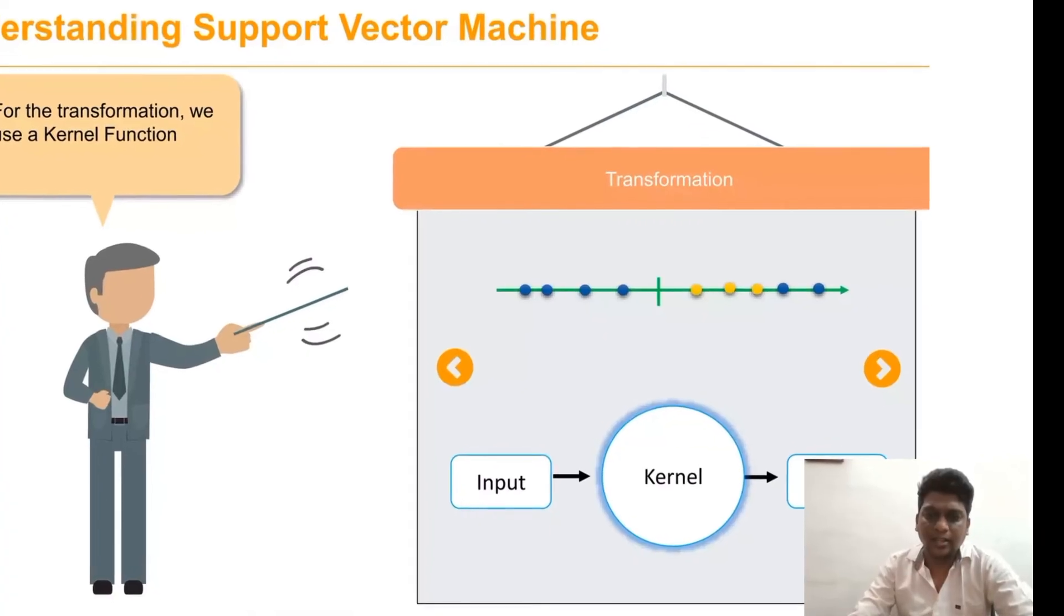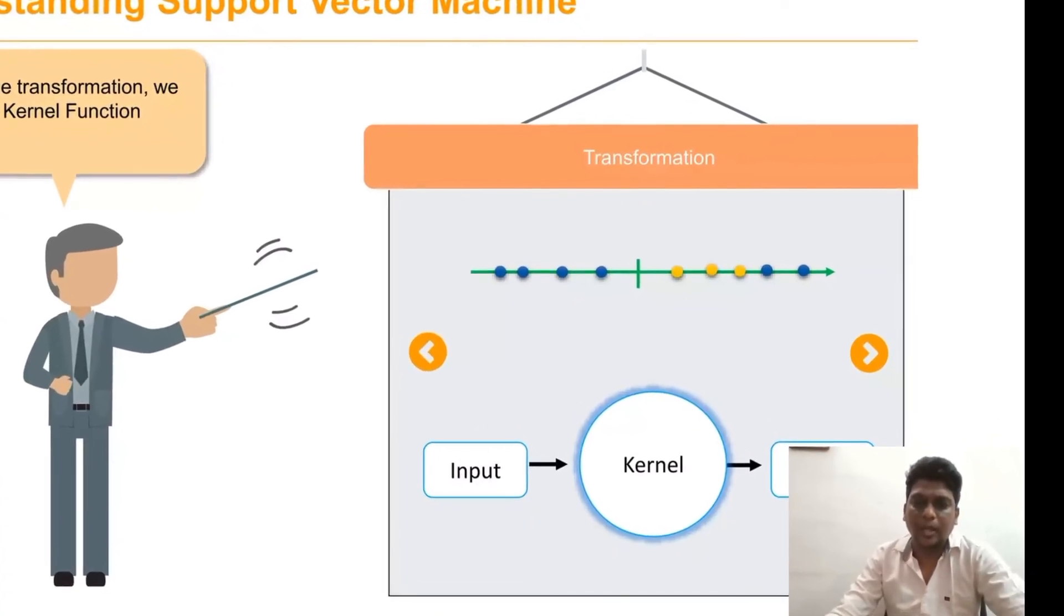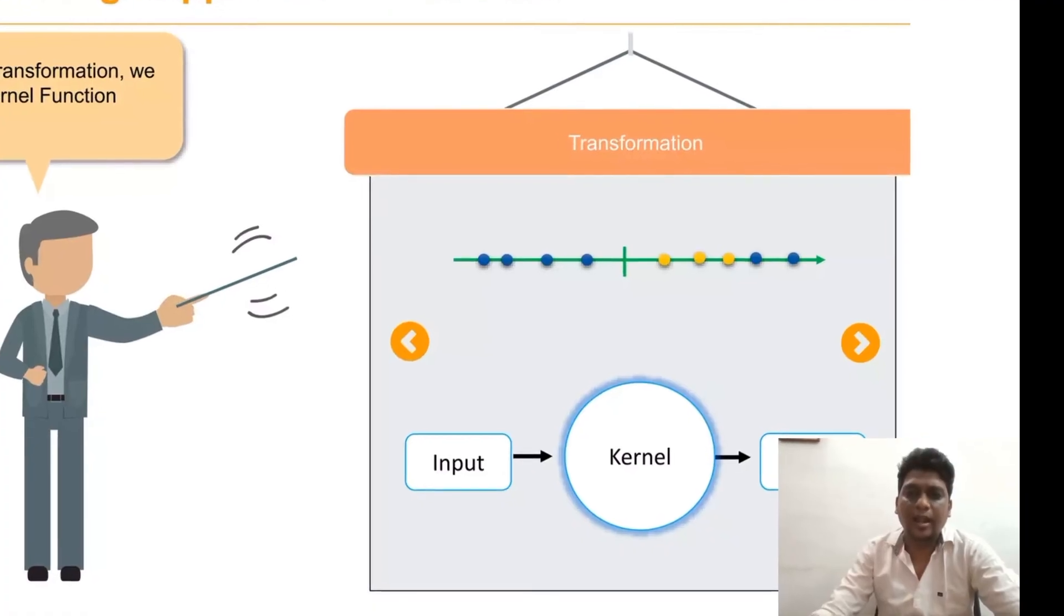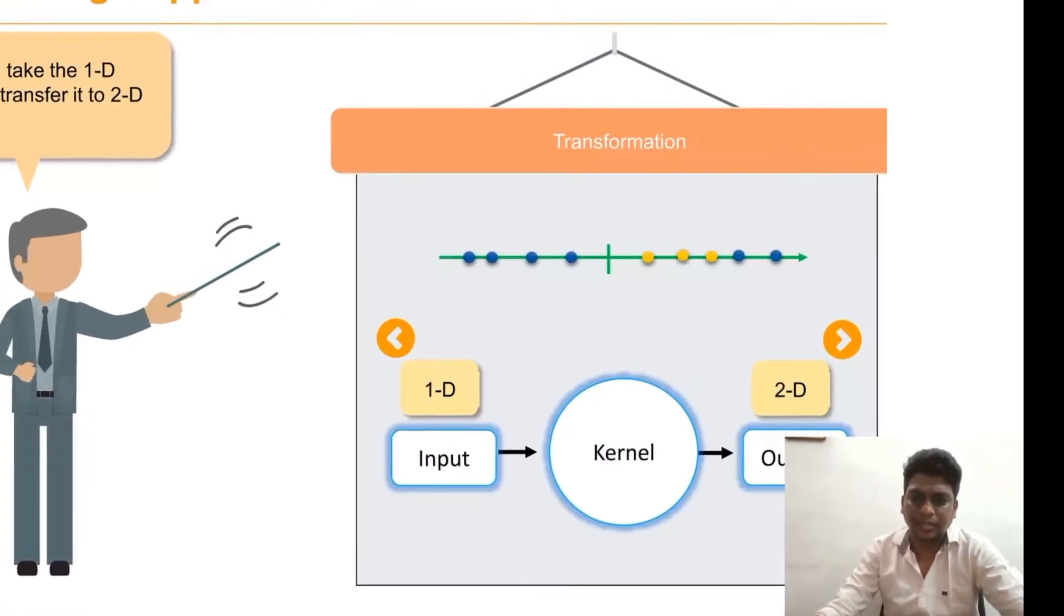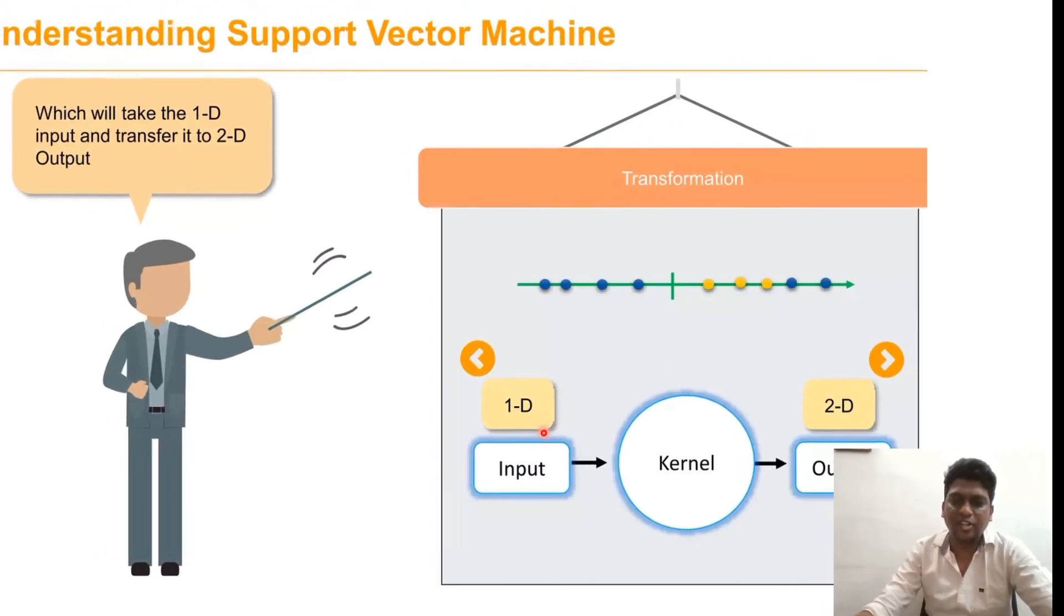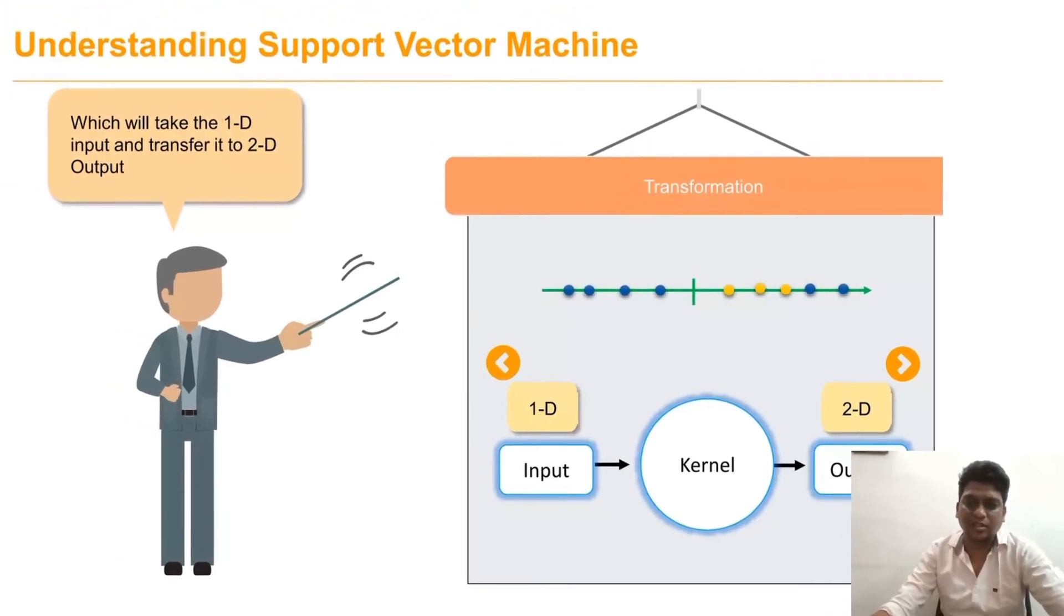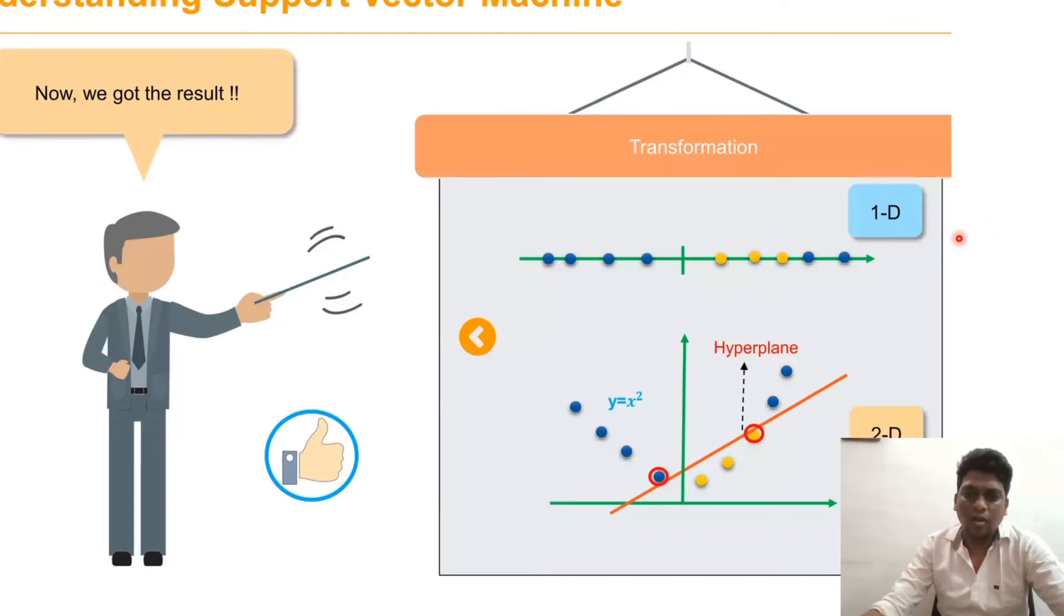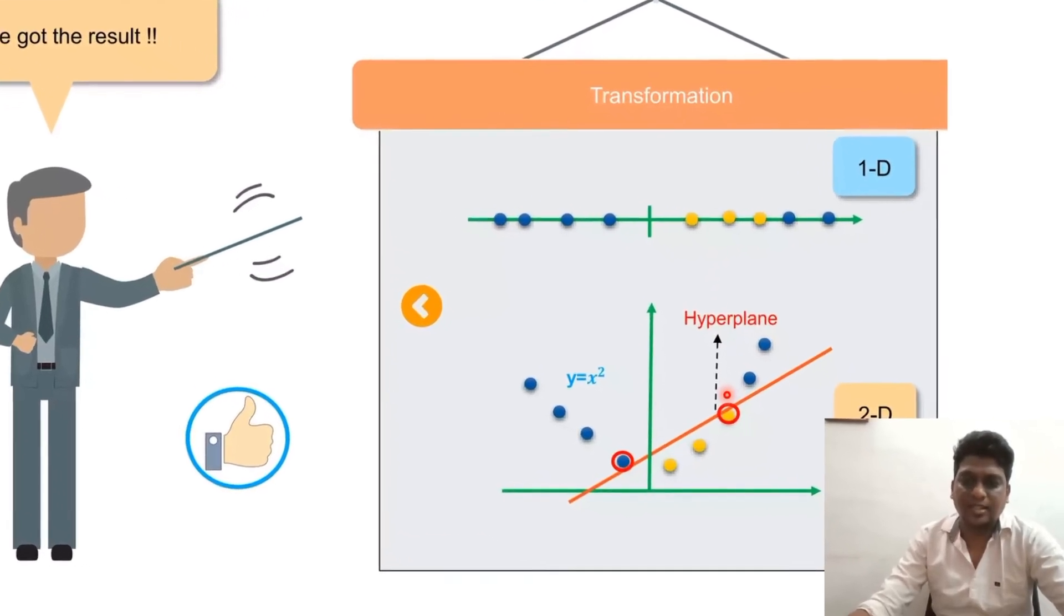For that, we are using a kernel to make them into two-dimensional data. That kernel function helps to convert the 1D function into 2D function. Now we get the optimal hyperplane result.